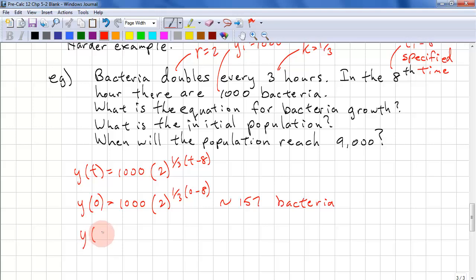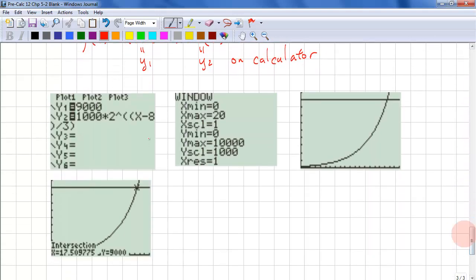And let's do y of c. This will equal 9,000. And this is 1,000 times 2 to the power of 1 third c minus 8. We set this to y1, we set this to y2 on the calculator. And I've already put this in the calculator. So we set y1 to 9,000, we set y2 to our function. And we set a window. We have a minimum of 0 for x and a maximum of 20. If this doesn't work, we can reset 20. We need a y min of 0 and we need a y max of at least 9,000, so I'm going to round it off to 10,000. Change your y scale to 1,000. Otherwise you get scale marks all the way down the side.